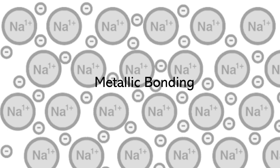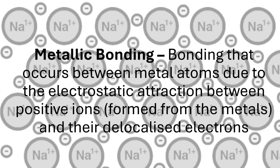Hello, today we will be looking at the third and final type of chemical bonding: metallic bonding. A metallic bond forms due to the electrostatic attraction between a metal's positive ion and the delocalized electrons they release to form the ion.